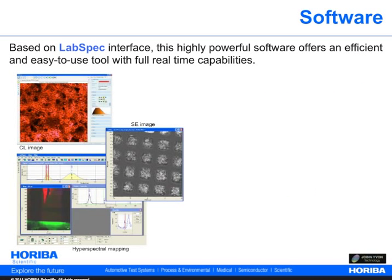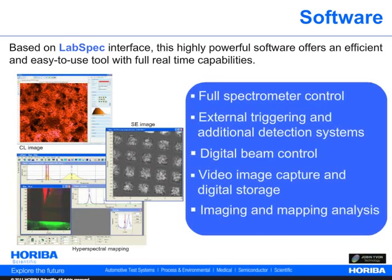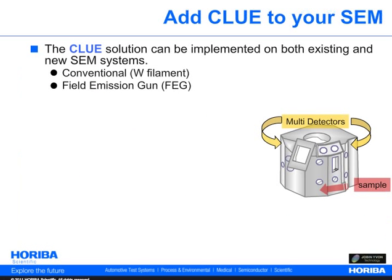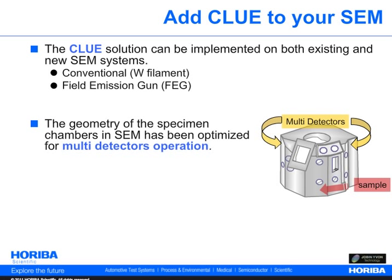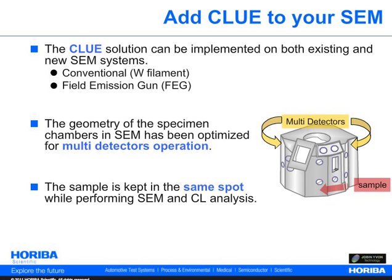The CLU series is driven by the LabSpec software. The software features comprehensive system control and advanced data acquisition routines for CL measurement and sample mapping. A large variety of advanced imaging functions and spectral analysis provides the versatility and performance required to analyze a large range of CL applications. The CLU packages are all compatible with conventional or field emission SEM and can be implemented on both existing and new SEM systems. The SEM chamber enables attachment of the CL probe to one of its horizontal ports, and the sample is kept in the same spot while performing SEM and CL analysis.